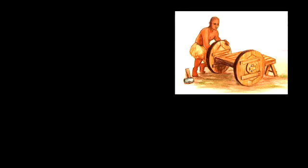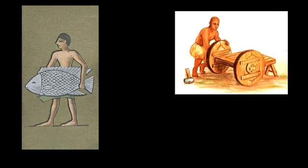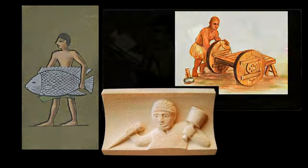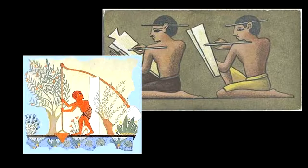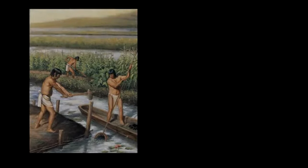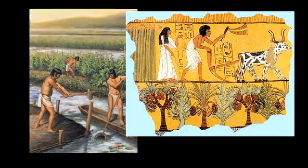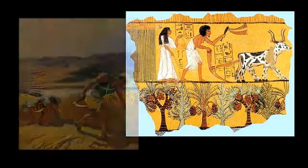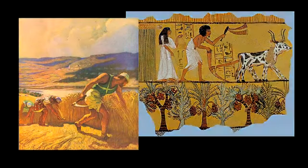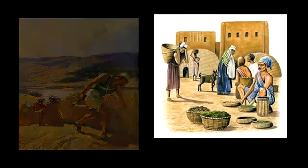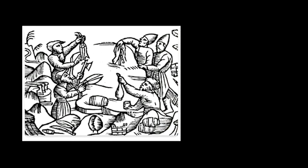As communities became more self-sufficient in basic needs, specialisation began to develop. They focused on what each did best and offered their services to others for something in exchange. As demand rose, they began to produce surplus for regular barter.